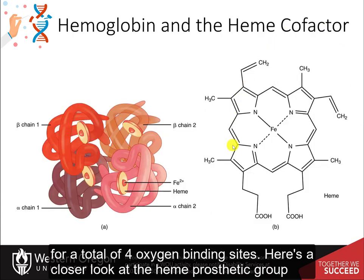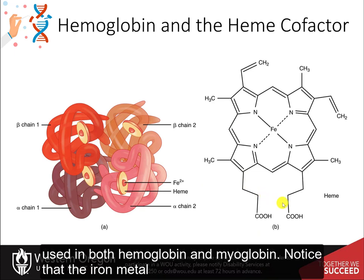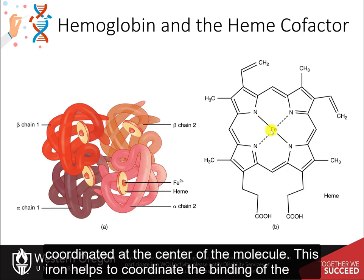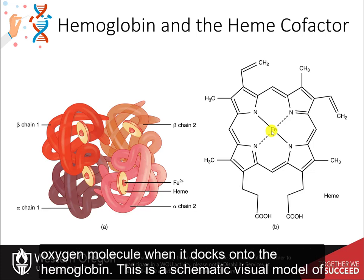Here's a closer look at the heme prosthetic group used in both hemoglobin and myoglobin. Notice the iron metal coordinated at the center of the molecule. This iron helps coordinate the binding of the oxygen molecule when it docks onto the hemoglobin.